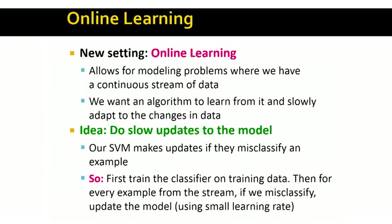The idea we'll be using is to slowly update the model as the data is arriving. What we notice is that in our SVM formulation, whenever a training example came in, we can think of it as: we classify it, then we see whether we classified it correctly or not. If we misclassified it, the gradient was non-zero and we would make a step. This was in the formulation of stochastic gradient descent.